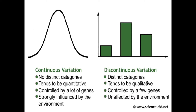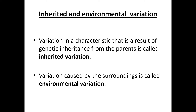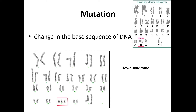Here are the differences between continuous and discontinuous variation. Inherited and environmental variation is similar to phenotypic and genetic variation. Variation in a character that results from genetic inheritance from a parent is called inherited variation, and variation caused by the surrounding environment is called environmental variation.